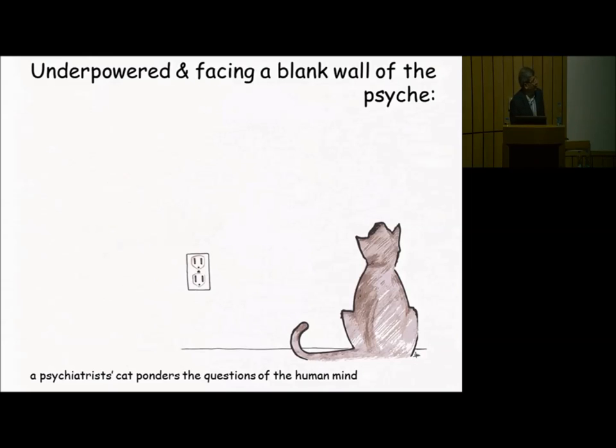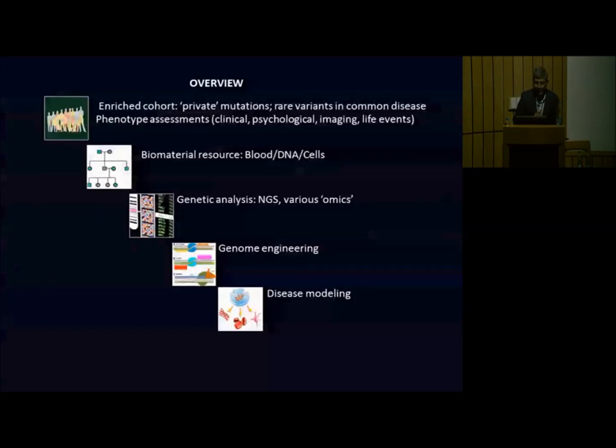This is the great mystery of contemporary science. We thought with the help of NCBS and friends and colleagues at NCBS and INSTEM and various places, we would set this power issue right. We would take our enlist cohorts, identify these private mutations, identify the rare variants at least in the common diseases that we see, do very detailed phenotype assessment including clinical, psychological, imaging and life event data. The biomaterial would be collected using blood, DNA and cells. These would be subjected to detailed genetic analysis and ultimately to genome engineering and disease modeling, which would help us answer some of these power issues that have proved so difficult to address till now.